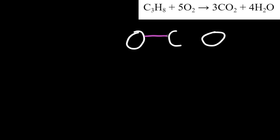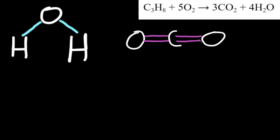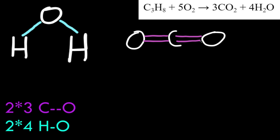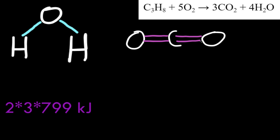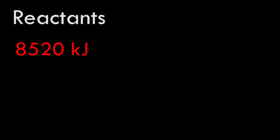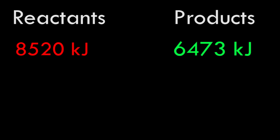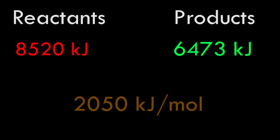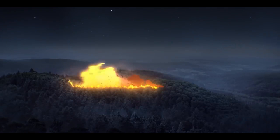For the products, we draw carbon dioxide and dihydrogen monoxide. CO₂ has two carbon-to-oxygen double bonds, and water has two oxygen-to-hydrogen bonds. Multiplying by three and four moles respectively, we plug in bond energies of 799 kJ and 465 kJ. Since energy is lost when bonds are broken, 6,473 kJ/mol are lost from the reactants. Since energy is released when bonds are formed, 8,530 kJ/mol is released from the products. Our net energy created is 2,050 kJ per mole of propane.